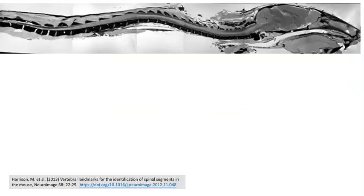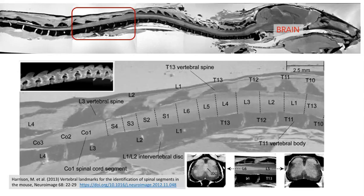Switching to a mouse model, this is an image from Harrison and colleagues who did MRI studies on mice to identify landmarks. The brain of the mouse is at the top. Zooming in, we can see the 13th thoracic vertebra — I picked this on purpose to point out that different vertebrate species have different numbers of vertebrae and different numbers of spinal segments.